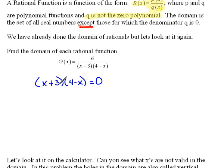This is already in factored form, so we basically have something times something equals zero. We can now use that zero product property that says either X plus 3 must equal zero or 4 minus X must equal zero. So if I solve each one of these, I have X equals negative 3, and if I move the X over here, we get 4 equals X.